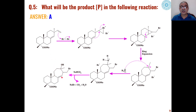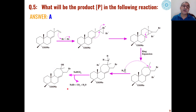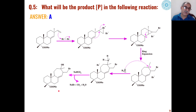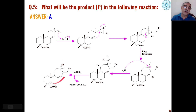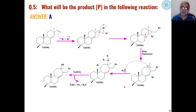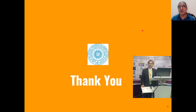This is the major product, formed in 41%. If you examine all four choices, the other three products can be formed from this major product only. In fact, all four choices are formed as products, but this one is the major product because only this product gives rise to the other three. Thank you very much.